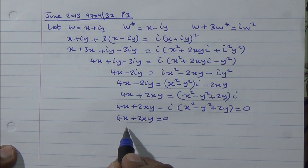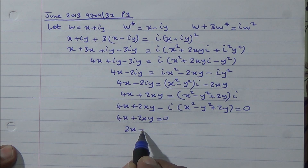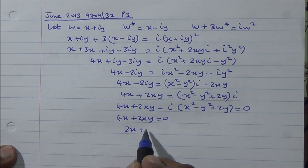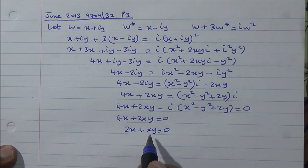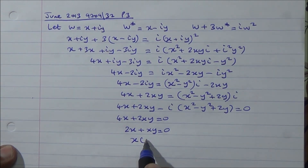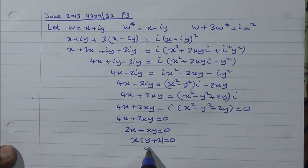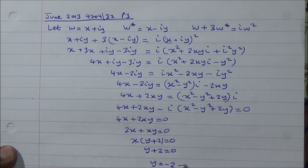From 4x plus 2xy equals 0, factoring out 2x gives 2x(2 plus y) equals 0. Since x is common, we get y plus 2 equals 0, so y equals minus 2.